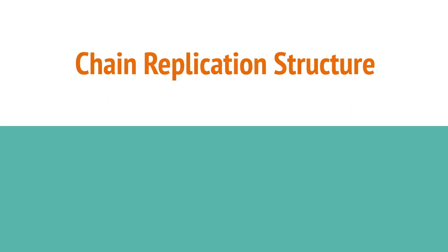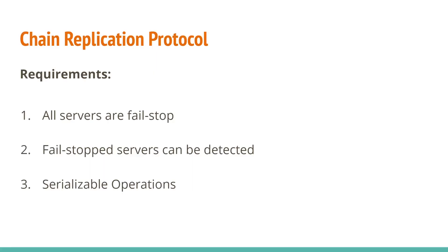Next, we'll look at how the servers are organized in a chain replication system. For a chain replication system to work, all the servers need to be fail-stop. This means that when the server fails, it halts operation instead of continuing and making erroneous changes. Fail-stopped servers must also be detectable by the rest of the network for recovery to begin. And lastly, servers must execute operations serially. This guarantees that the database will remain consistent even when non-idempotent operations are executed concurrently.